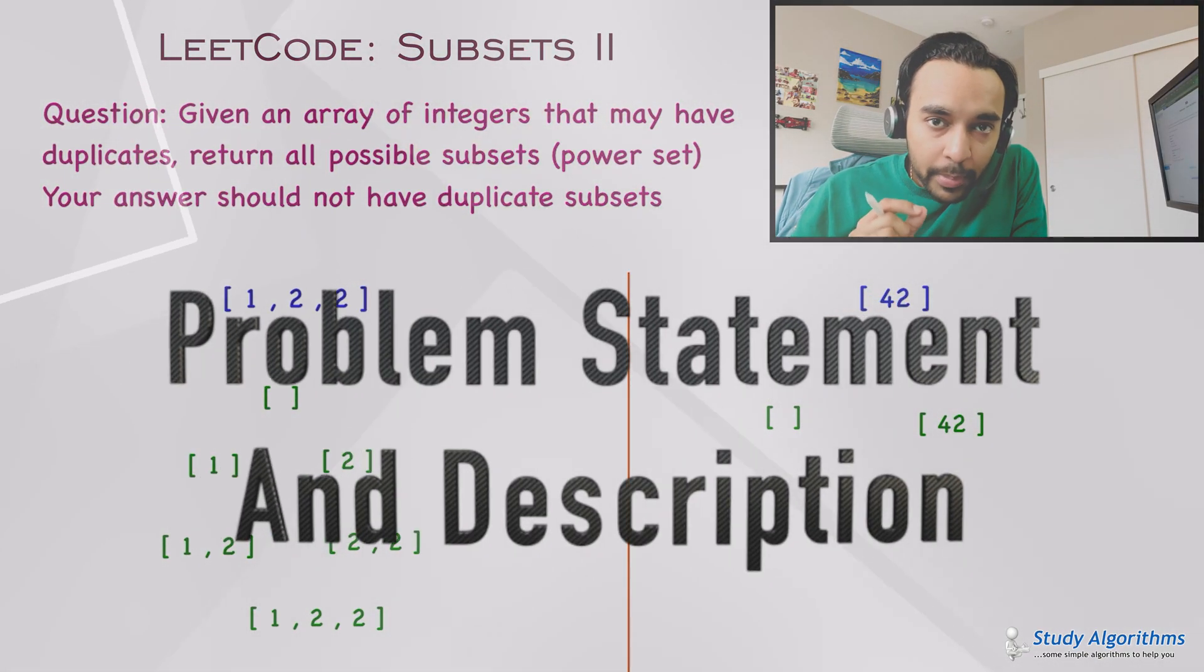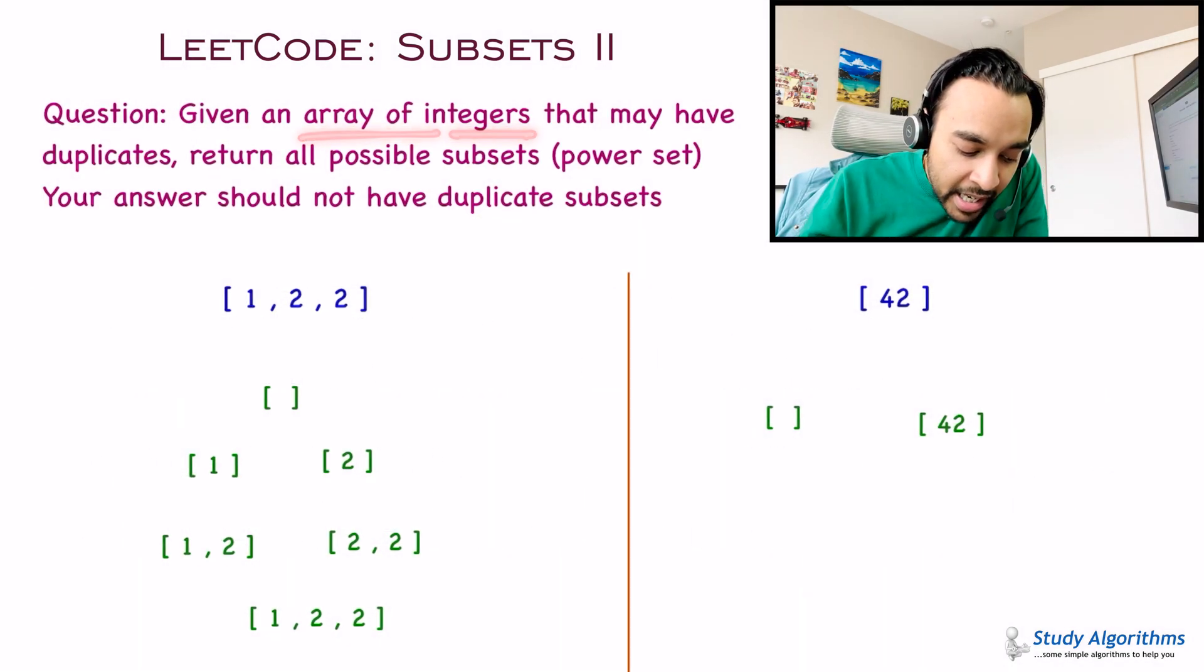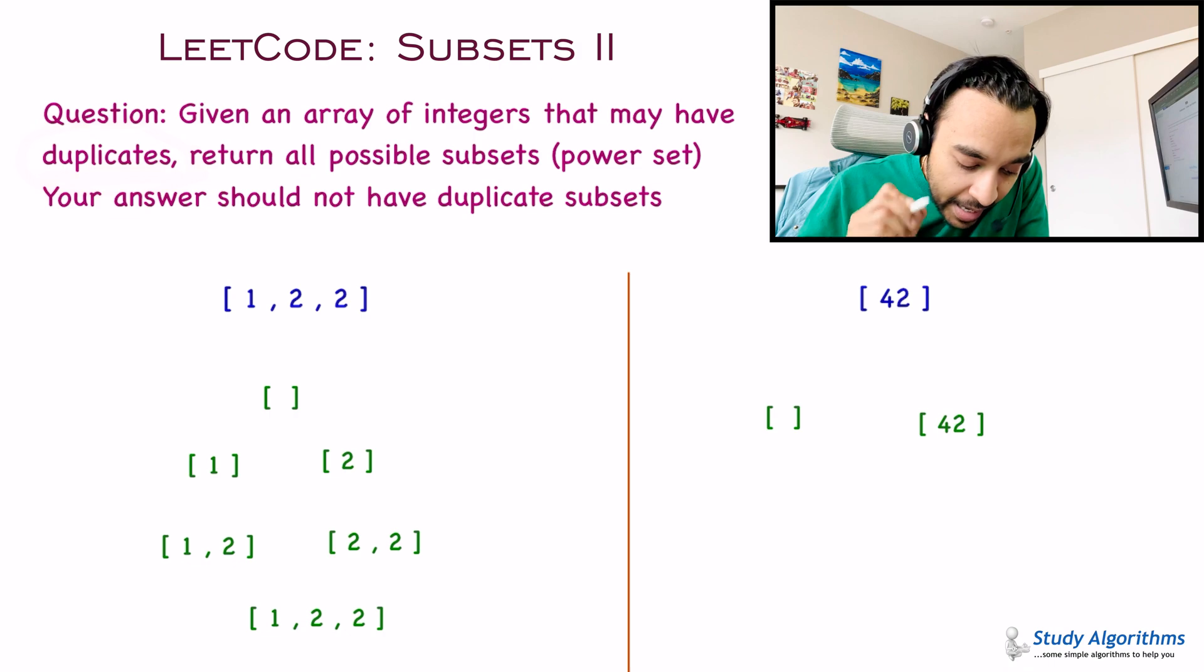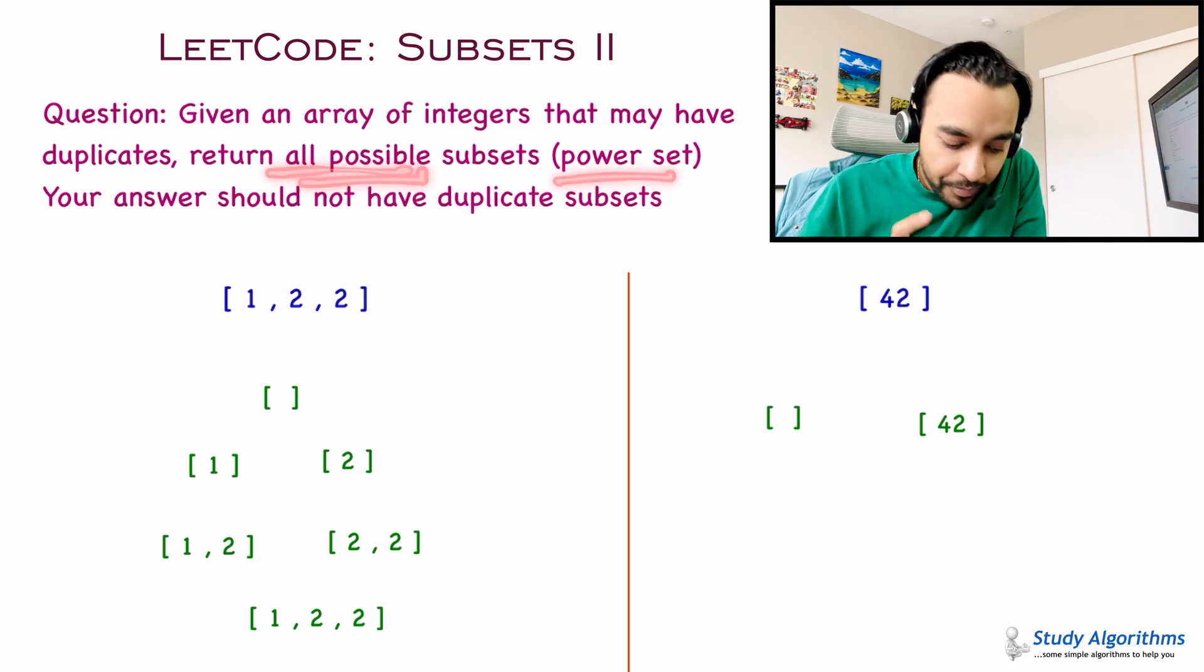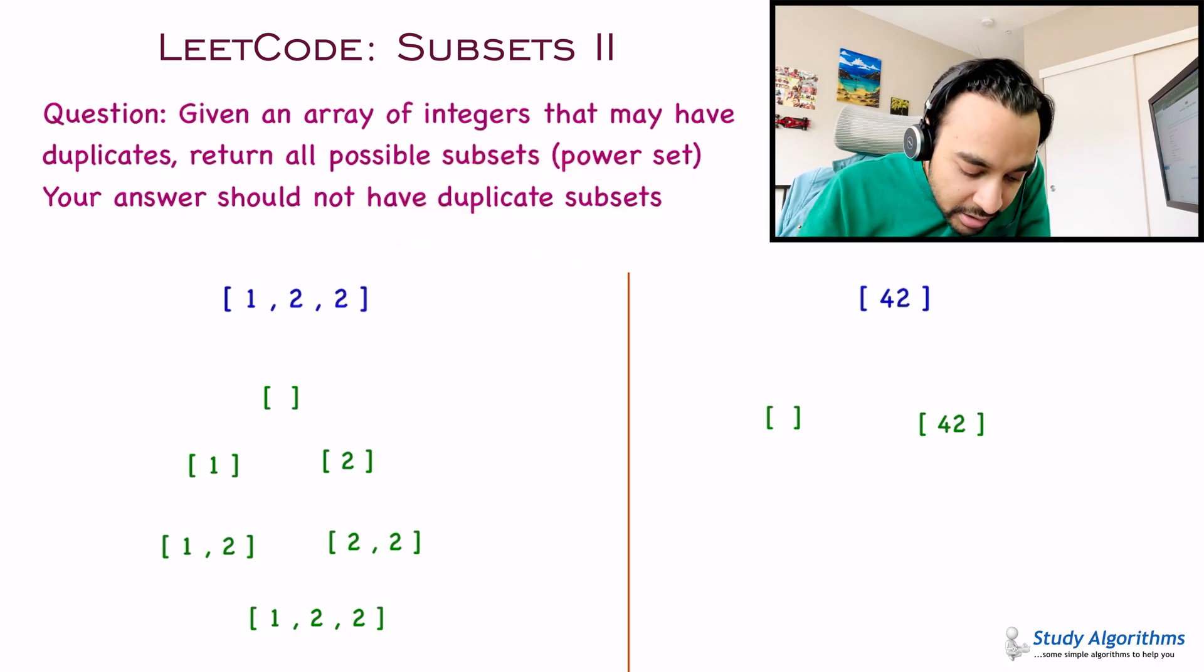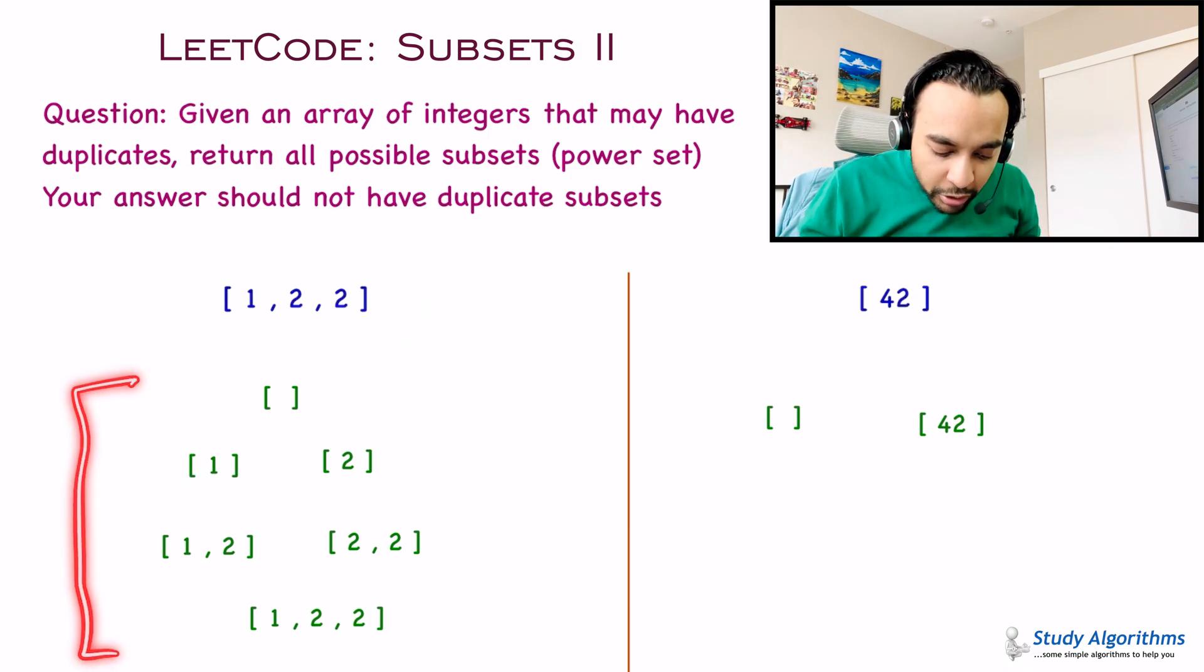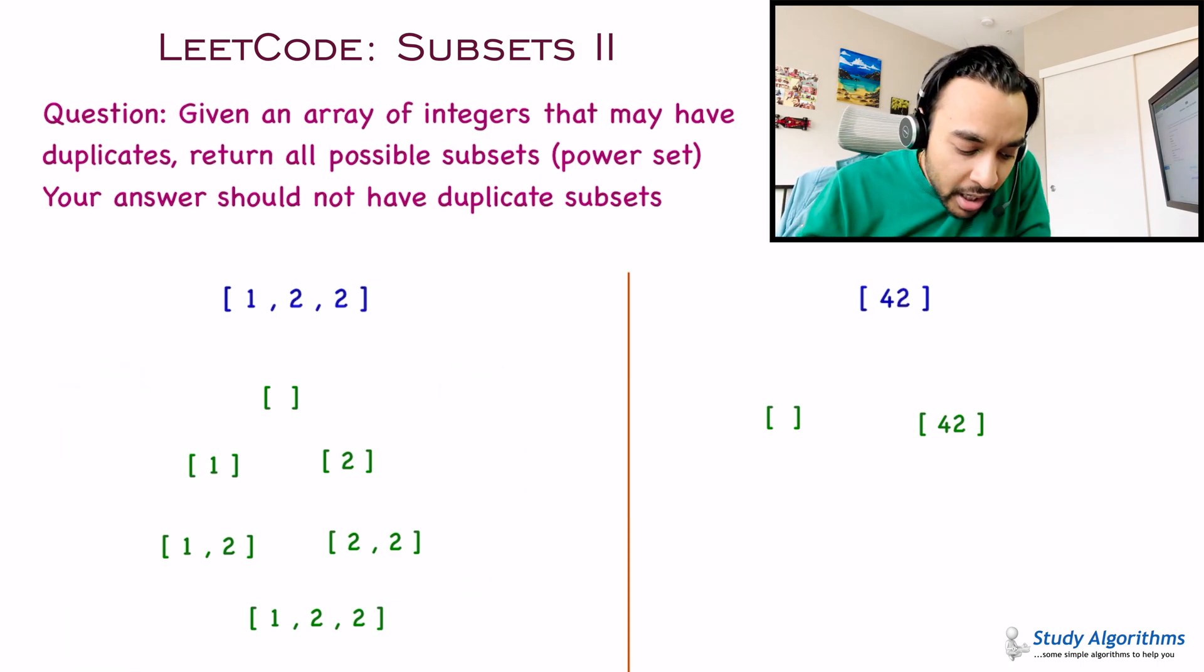Let us quickly try to make sure that we are understanding the problem statement correctly. You are given an array of integers that may have duplicates. This duplicates is a very important term over here. And given this array, you have to return all the possible subsets. That is the power set. And you have to make sure that your answer should not have any duplicate subsets. Right? This is the problem statement. So, let us look at a sample test case.